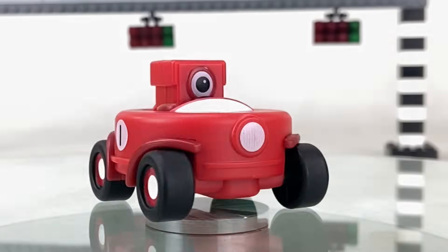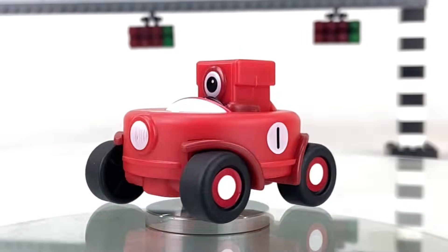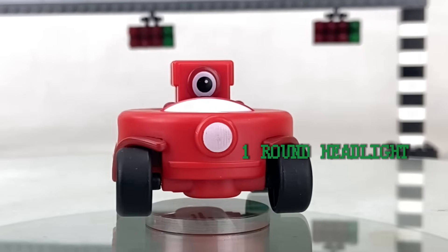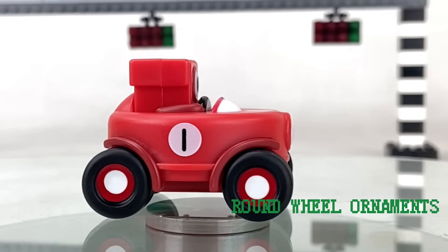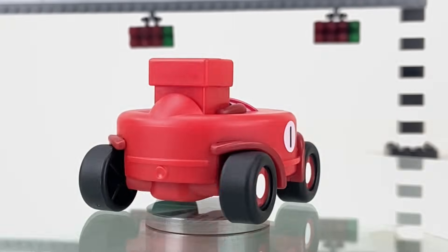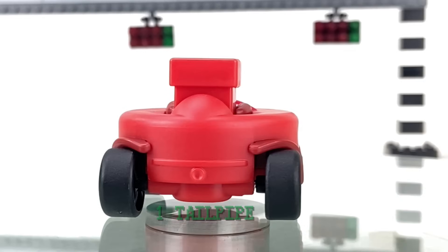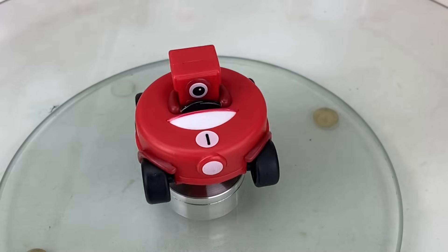Driver number one is in her red race car with one round headlight. She has round wheel ornaments and one stripe at the sides. Finally, she has one tailpipe at the back. From the top we can see that her race car is round shaped. Now that's a pretty cool car.